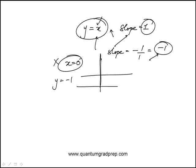y equals minus 1 would be like this. It has a slope of 0. So B is out.